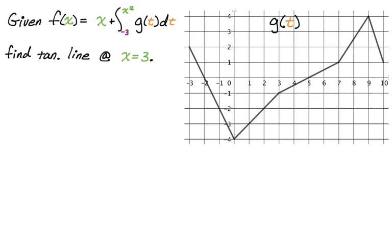We are given that f(x) is equal to x plus the integral from negative 3 to x squared of g(t)dt. We want to find the tangent line at x equals three, and we're also given the graph of g(t).